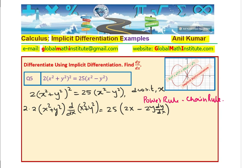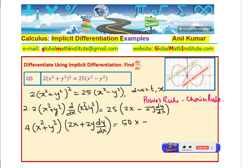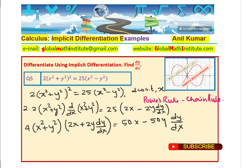Let us simplify and find the derivative of x² + y². So we get 4 times (x² + y²) times the derivative of (x² + y²), which is 2x + 2y dy/dx — that is implicit differentiation. On the right hand side, opening the bracket, we get 50x minus 50y dy/dx. I hope this step is absolutely clear. The idea now is to figure out what dy/dx is.